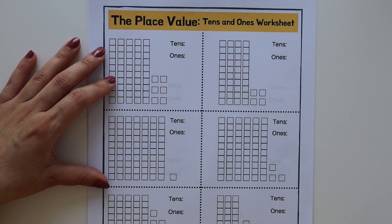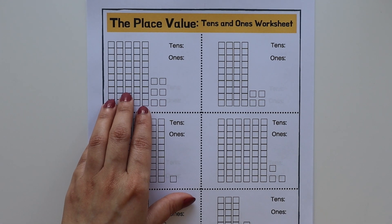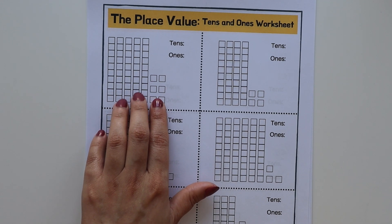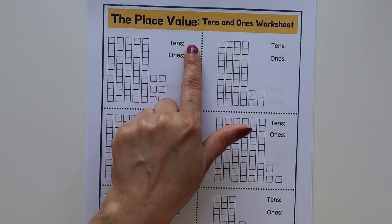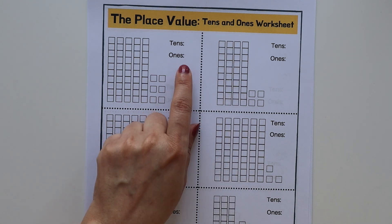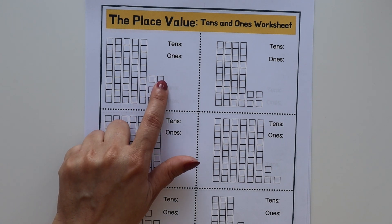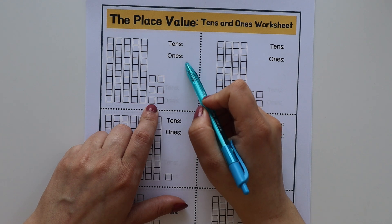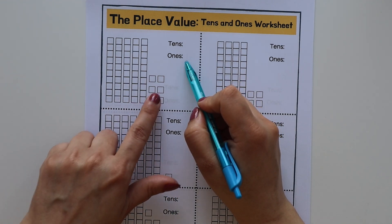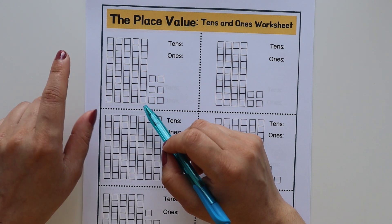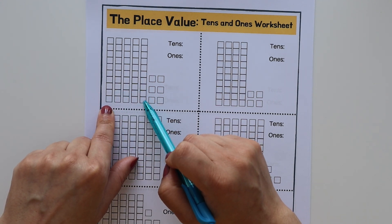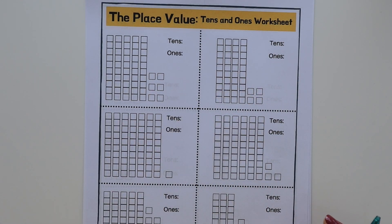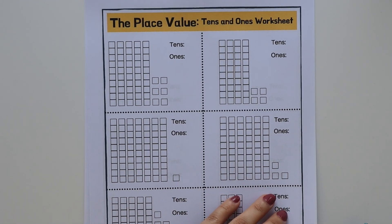After that, make worksheets using blocks — similar to what I explained earlier. The child has to look at the blocks and write which number is at the ones place and which is at the tens place. For example, counting single boxes: 1, 2, 3, 4, 5, 6 — the child writes 6 at the ones place. Then counting groups of blocks for tens: 1, 2, 3, 4, 5 — so 5 goes in the tens place. This helps the child clearly understand the ones and tens concept.